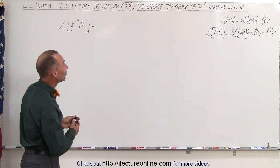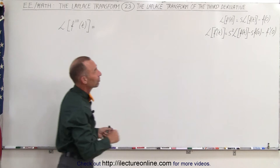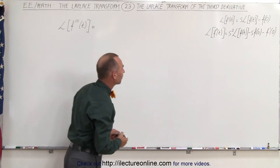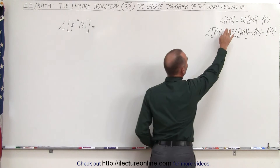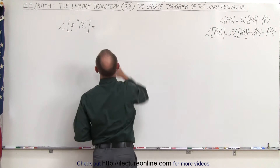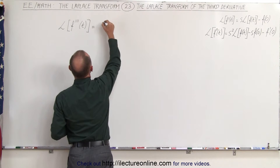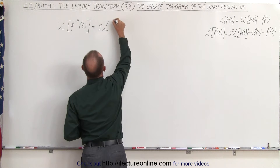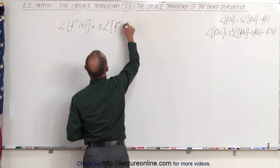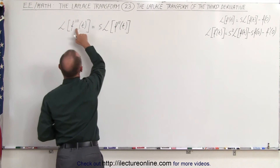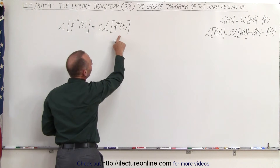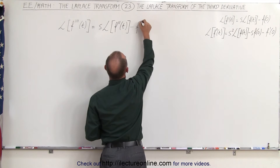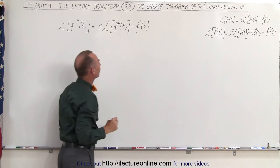Notice in the upper right corner we have the Laplace transform of the first derivative and the Laplace transform of the second derivative. Using the technique of the Laplace transform of the first derivative, this can be written as s times the Laplace transform of the second derivative of the function, because we simply reduce it by one derivative from the third down to the second, minus the second derivative of the function evaluated at zero.